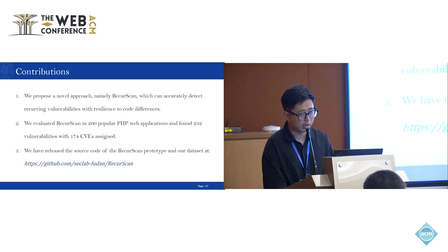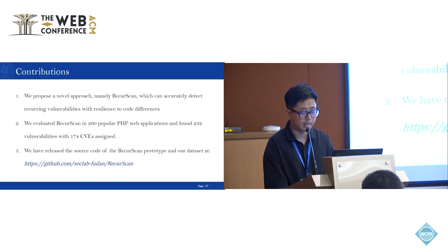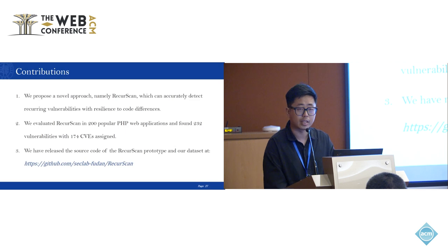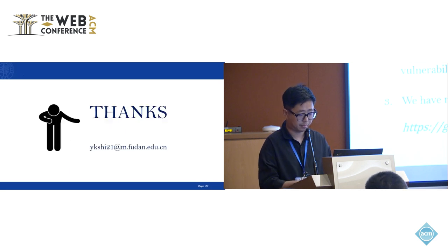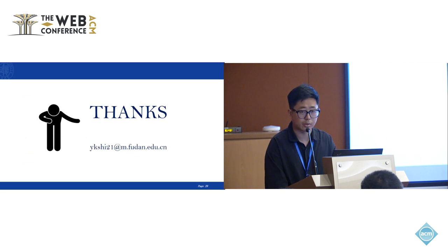In conclusion, we have made three contributions in this paper. First, we propose a novel approach to detect recurring vulnerabilities that can better tolerate code differences. Second, we evaluate our approach on 200 popular PHP web applications, effectively helping the open source community address vulnerability risks. Third, we have released the source code of the Rikerscan prototype and our dataset at our lab's repository. For more detailed information, welcome to read our paper. That's all, thank you.